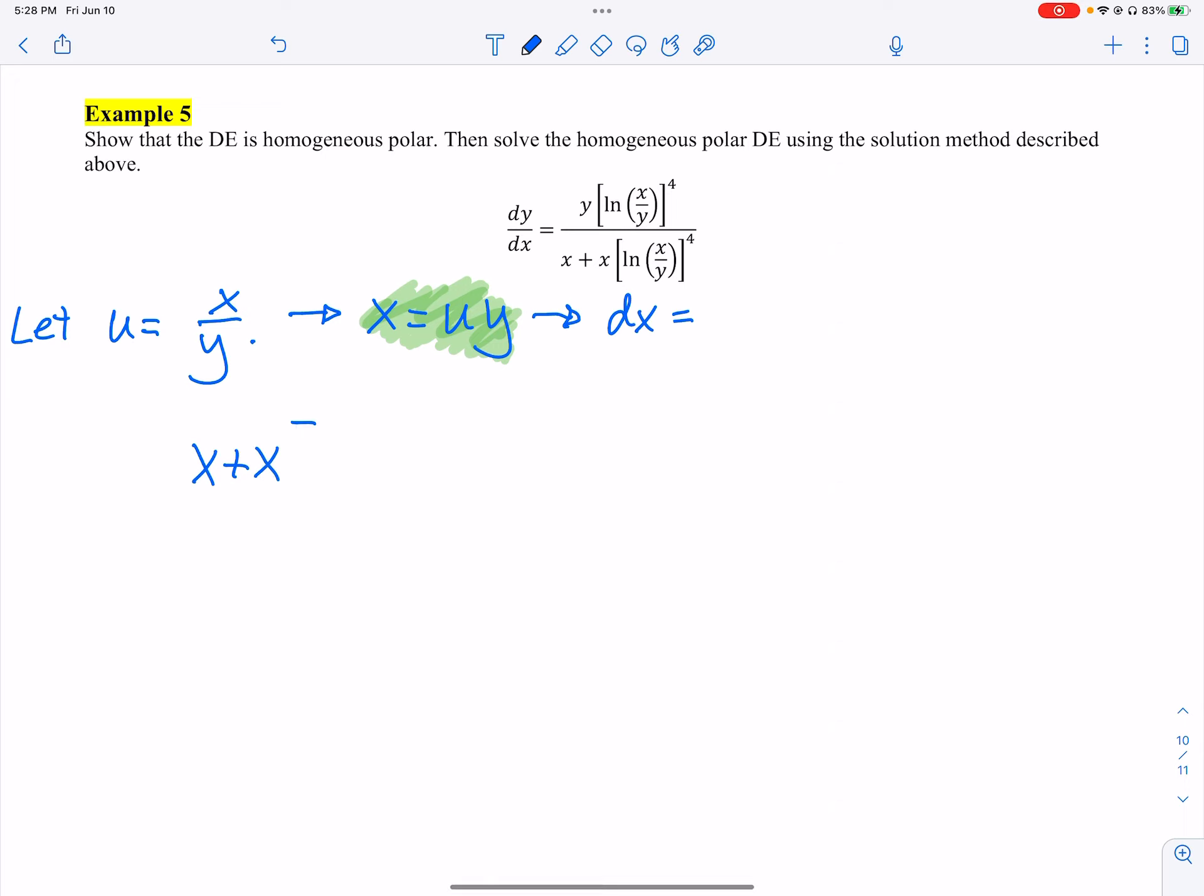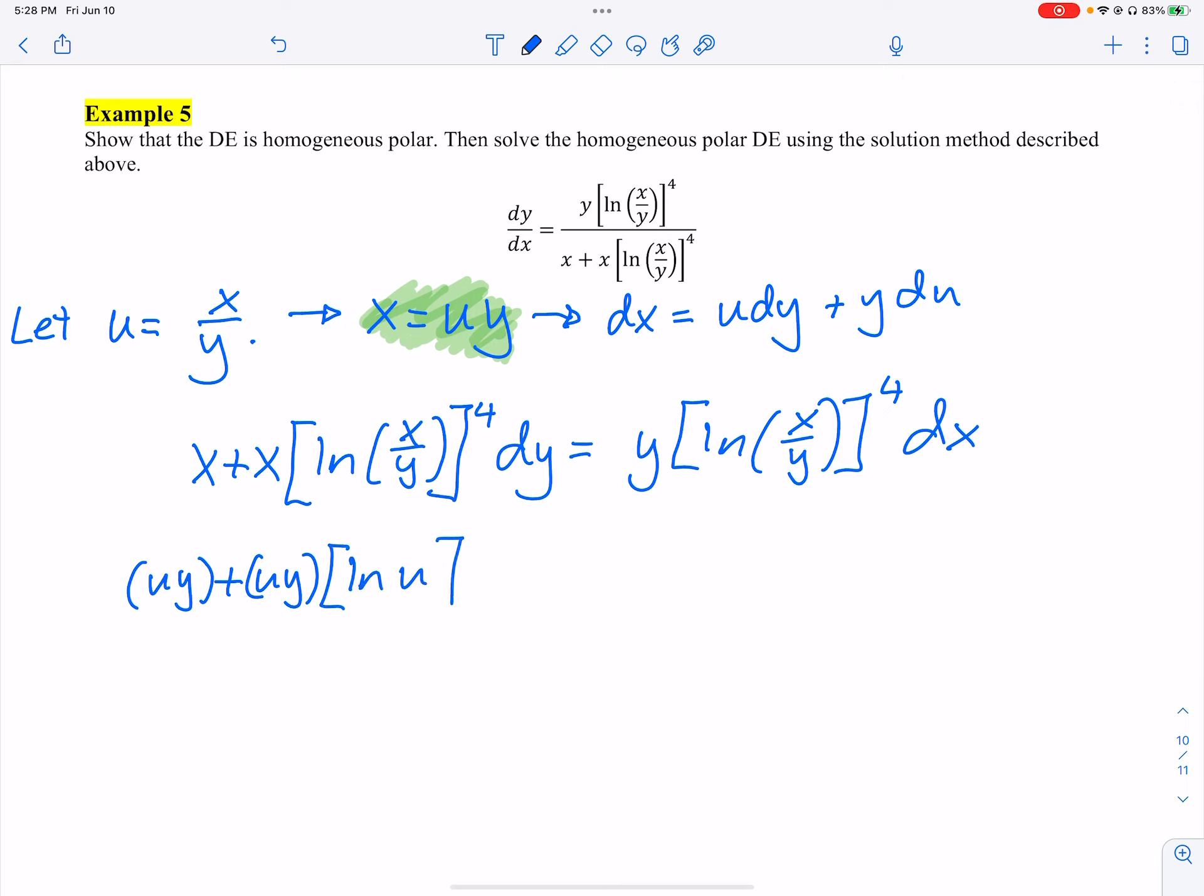So what I'm going to do instead is I'm going to just take the equation that we have above. x plus x ln of x over y, that whole thing to the fourth, dy equals y times ln x over y to the fourth dx. Now that replacement is not going to feel so crazy. So this is dx equals u dy plus y du.